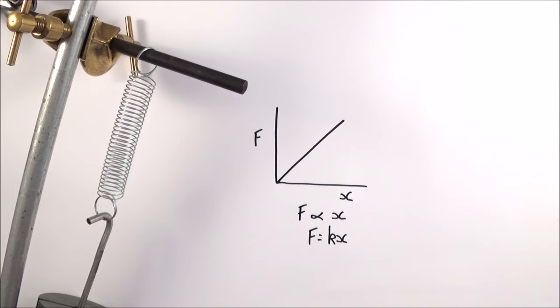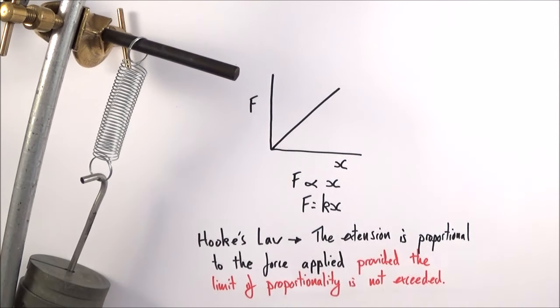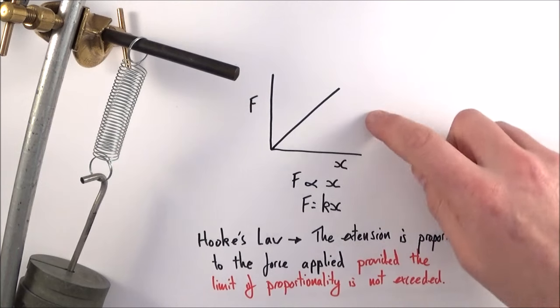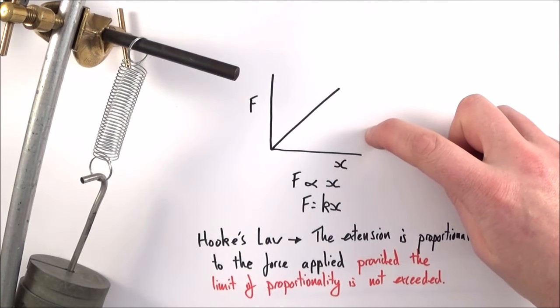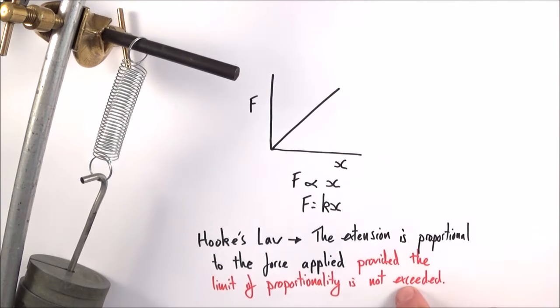Hooke's Law states that the extension is proportional to the force applied, provided that the limit of proportionality is not exceeded. What we can see here is that the force is equal to kx, where k is the spring constant.